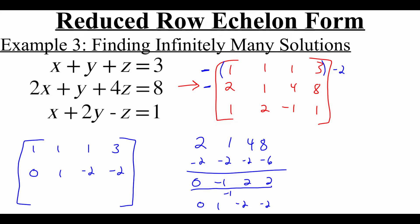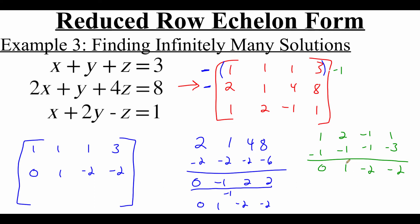Now for the bottom row — one, two, negative one, one — the first thing is to zero out the one in the front. Multiplying the top row by negative one gives negative one, negative one, negative one, negative three. Adding those gives zero, one, negative two, negative two. Now I need to zero out that one in the second entry without changing the zero we just got. So I use the new middle row multiplied by negative one, giving zero, negative one, two, two. Adding these together gives zero, zero, zero, zero.